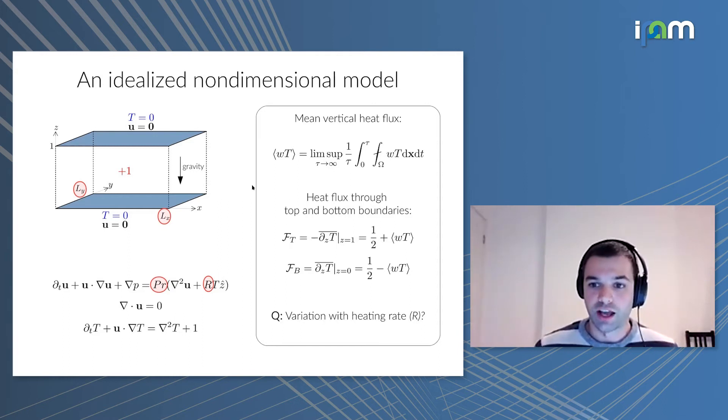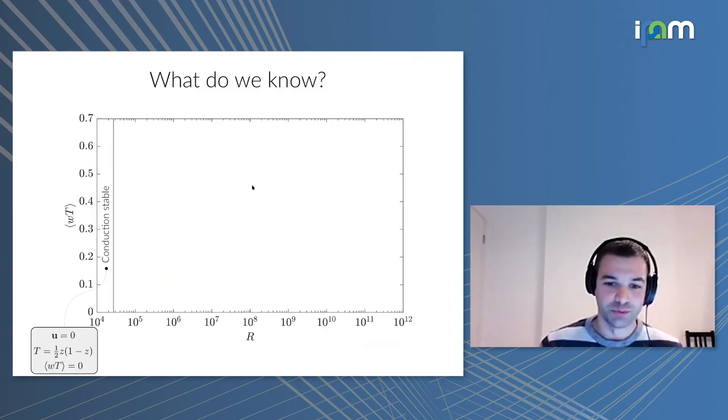The question I want to ask is: how does this heat flux vary with the heating rate, or in non-dimensional terms, with the Rayleigh number? Now, I'm not the first to ask this question, so we already know a few things. The steady state with no convection but just conduction is stable asymptotically when the Rayleigh number is very small. When R is smaller than about 27,000, nothing happens. The fluid is stationary and there's no convective heat flux, so wT on average is zero.